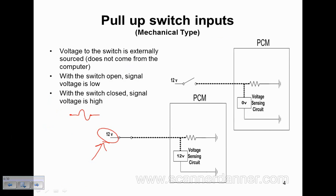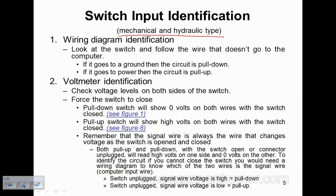So circuit design, you follow the wire. You want to remember this, without a voltmeter, using a wiring diagram, what do we do? Follow the wire that does not go to the computer. If it goes to a ground, it's a pull-down. If it goes to a power, it's a pull-up. So that's identification number one.